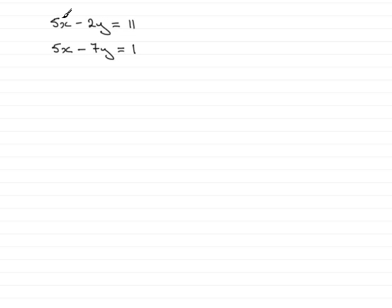Now I've picked this example purely because we've got a couple of x terms here, 5x and 5x, they're absolutely identical, so we can eliminate these by subtracting our two equations. But before we start, make sure you number your equations 1 and 2.